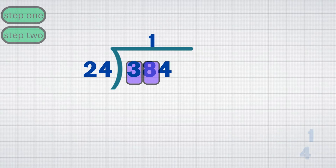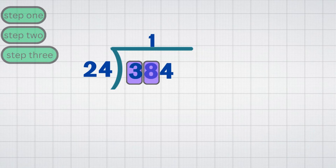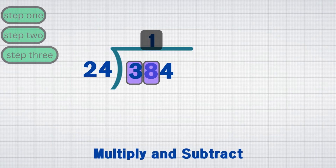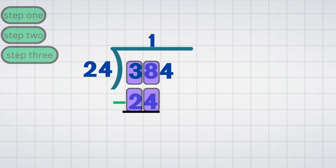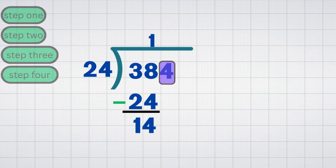Step 3: Multiply and subtract. Multiply 1 by 24 equals 24. Subtract: 38 minus 24 equals 14. Step 4: Bring down the next digit. Bring down the 4, making the new number 144.